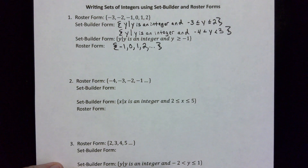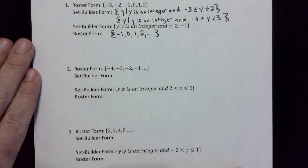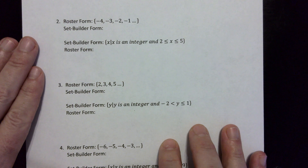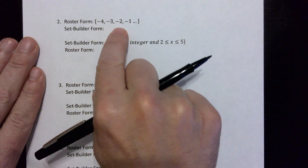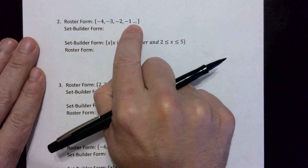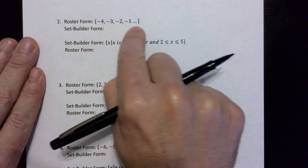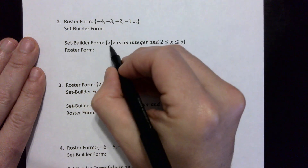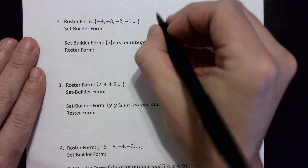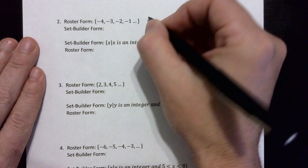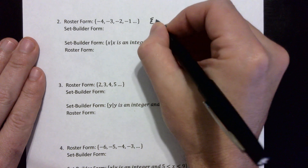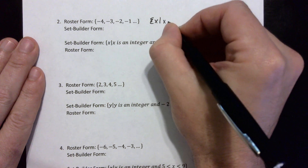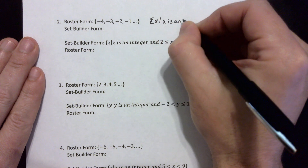Let's take a look at the second problem. The roster form is negative four, negative three, negative two, negative one, dot dot dot, meaning this pattern continues. We're dealing with x in this problem, so I'll use x. The first way to write it in set builder form is: x such that x is an integer.